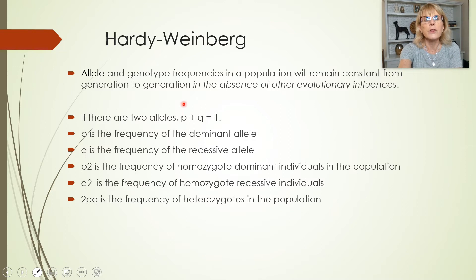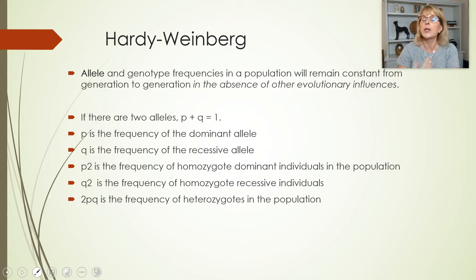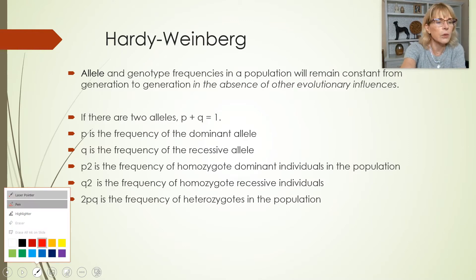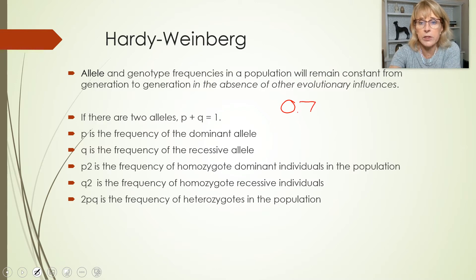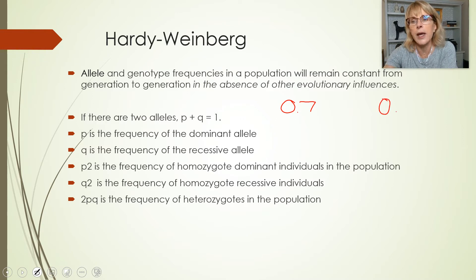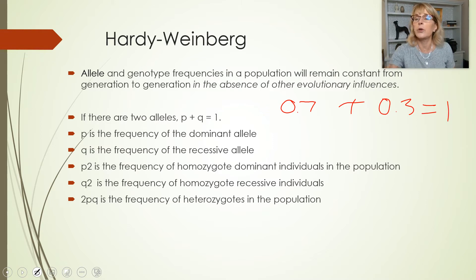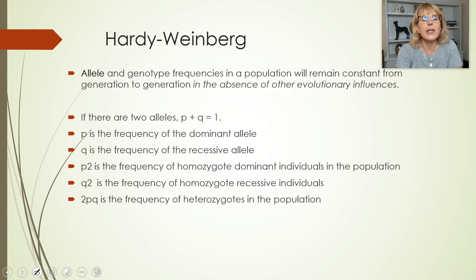If there are two alleles — and we're only talking about two-allele situations — the frequency of one allele (the dominant) plus the frequency of the other allele (the recessive) equals one. So if the frequency of the dominant allele is 0.7, the frequency of the recessive allele is 0.3, because 0.7 plus 0.3 equals one.